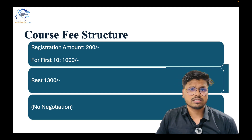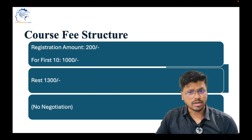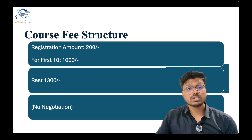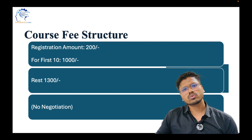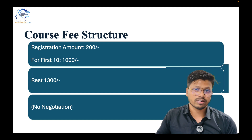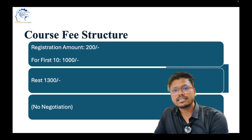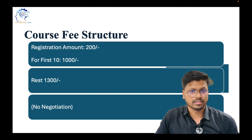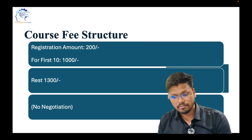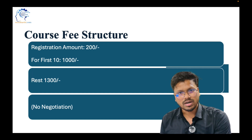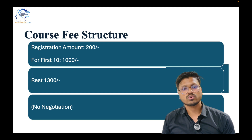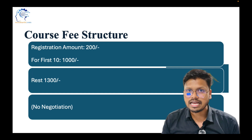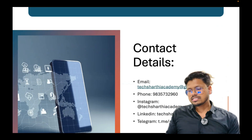Now talking about the fee structure: the registration amount is 200 rupees, which is the same as our initial batches. For the first 10 candidates, the course fee would be 1000 rupees; if they don't want to continue, the 200 registration amount will be refunded immediately. After 10 candidates, everyone should pay 1300 rupees. So the total for the first 10 is 1200, and for the rest it is 1500. There is no negotiation on this amount.